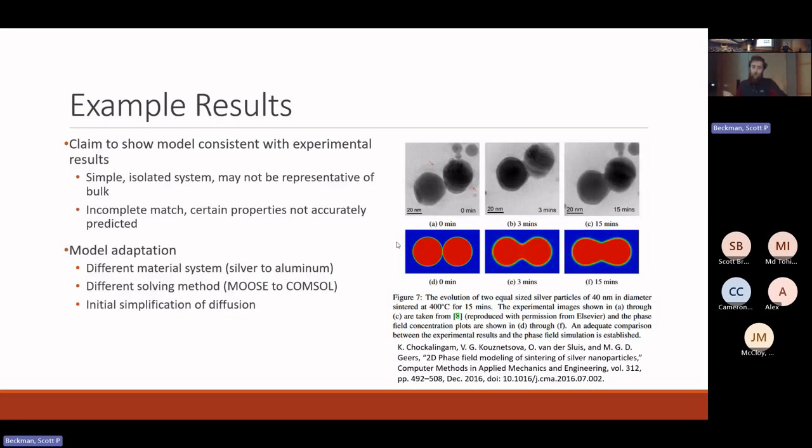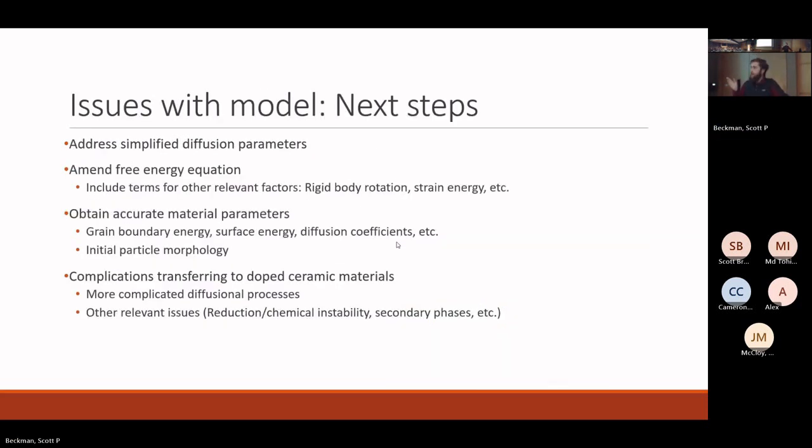I was working on modifying their formulation to use a different material system, specifically looking at aluminum instead of silver, since the sintering of aluminum powder is something that I believe we will be looking at in the future, and also using a different solving method. They used MOOSE, whereas we're using COMSOL, which is a multi-physics solver that can be used for modeling phase field structures and doing phase field simulations, but I found difficulty in getting COMSOL to function for me.